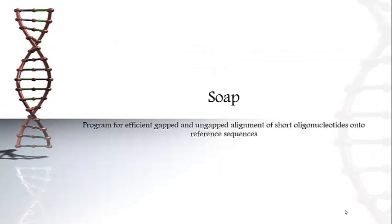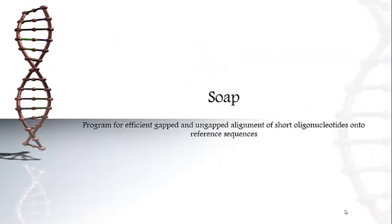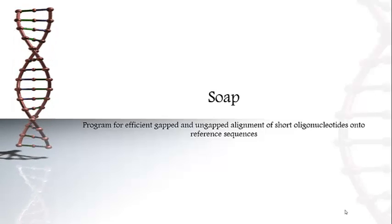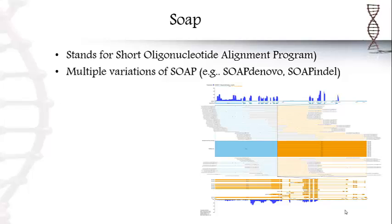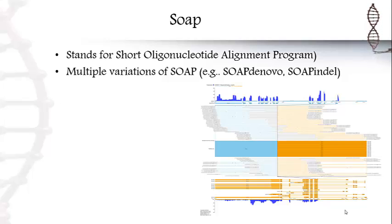SOAP stands for Short Oligonucleotide Alignment Program. What SOAP does is that it aligns gapped and ungapped alignments onto reference sequences. There are multiple variations of SOAP, such as SOAP DeNovo and SOAP Indel.